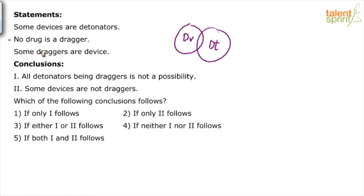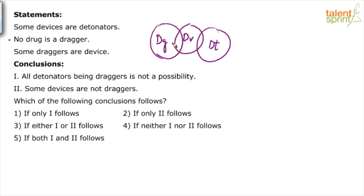Statement 3 says some draggers are device. We already have device drawn. So some draggers are device — how can you draw that? We can draw draggers here, let's say DG. Some draggers are device.